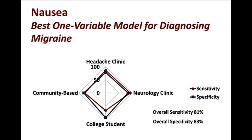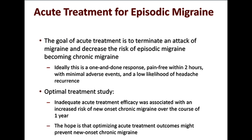Having diagnosed the migraine, our patients are going to ask for acute treatments. The goal of acute treatment is to terminate an attack of migraine and, by doing so, decrease the risk of episodic migraine becoming chronic migraine — of chronification or transformation from a lower frequency to a higher frequency of headache days. The acute treatment should be a one-and-done response, resulting in pain freedom at two hours with minimal adverse events and a low likelihood of headache recurrence.